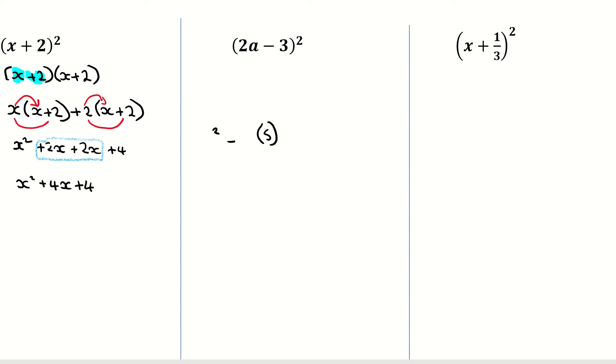Coming over to the second one. Process is the same. I've just put in a minus sign here and a coefficient in front of that a. And what I'm going to do here is, once again, it's asking me to square out the brackets. So that means I'm multiplying the number or the term by itself. So it's 2a subtract 3 multiplied by 2a subtract 3. That's what the question is asking me to do.